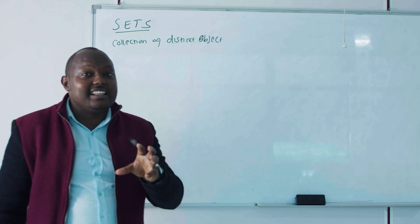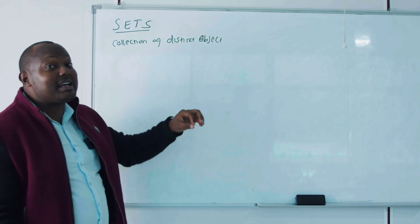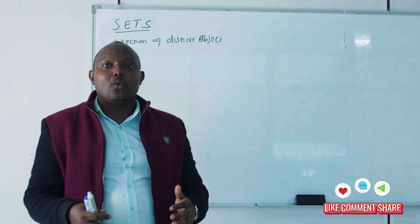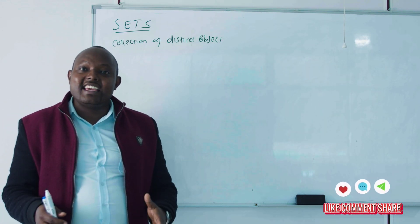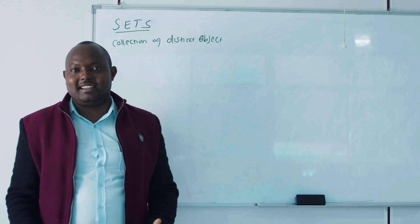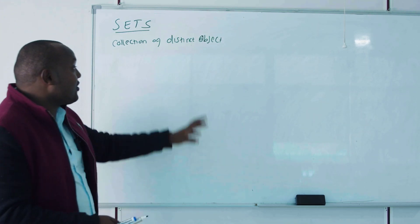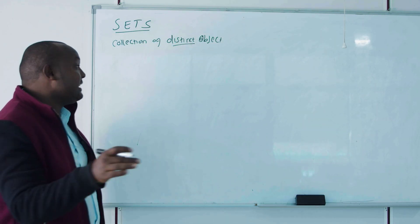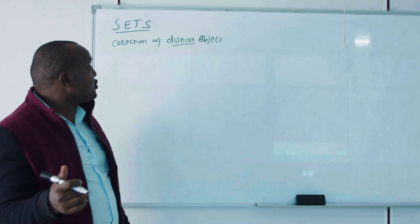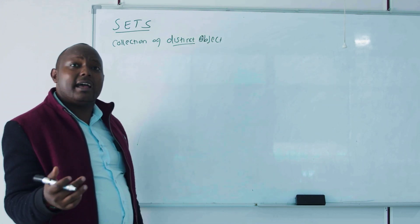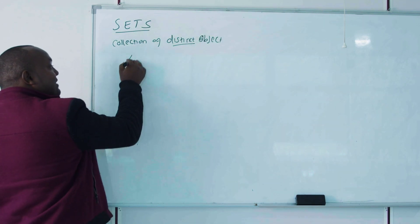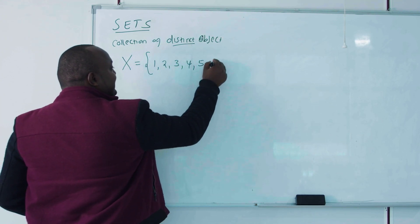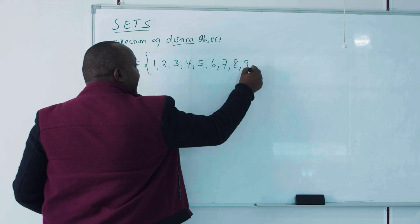What is a set? A set is a collection of objects, and these objects must be distinct. For example, in a university we can have a set of students taking engineering mathematics — that is a set of distinct objects. When I talk of distinct objects, it should be clear that elements are not repeated; you can say unique. For example, a set X of numbers between one and ten.